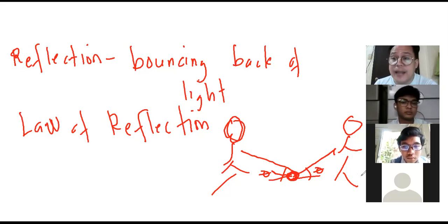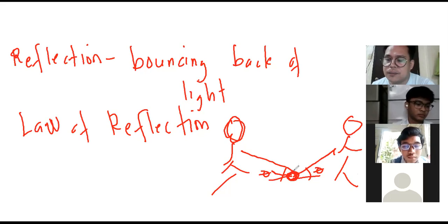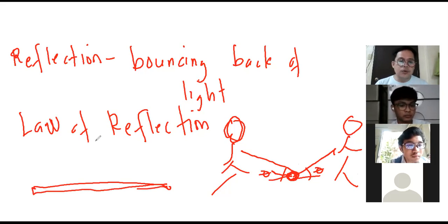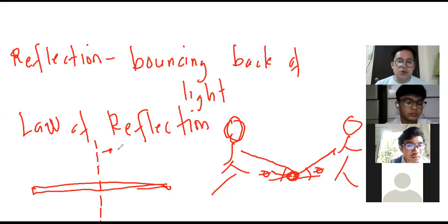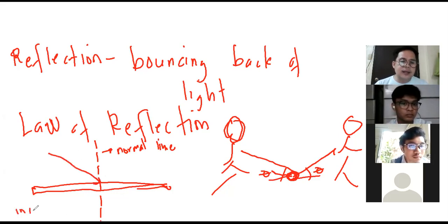This is also how light behaves. Light bounces back and reflects at the same angle as its incident ray. If you have a mirror and divide it with an invisible line, this invisible line is called the normal line, which divides the mirror into two. You will have an incident light ray — an incoming ray.